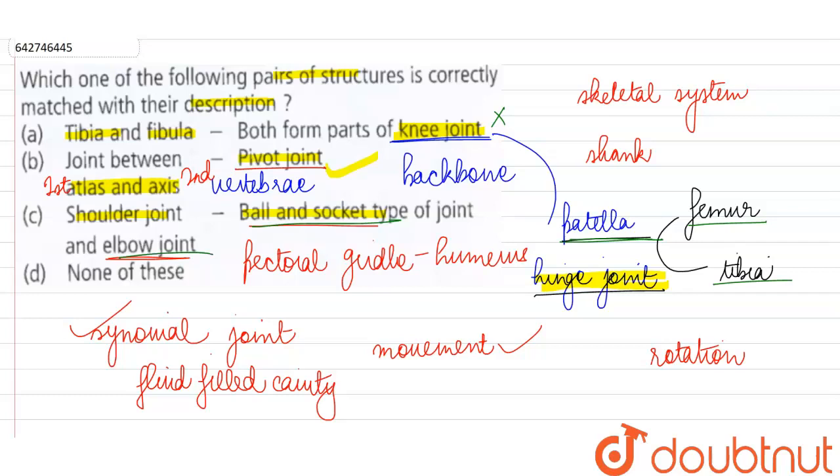For shoulder, ball and socket is correct, but elbow joint does not fall in this category. Elbow joint is a hinge joint. So therefore the only correct answer over here is option B. The joint between atlas and axis is the pivot joint which allows rotation and many different types of movements of our head.